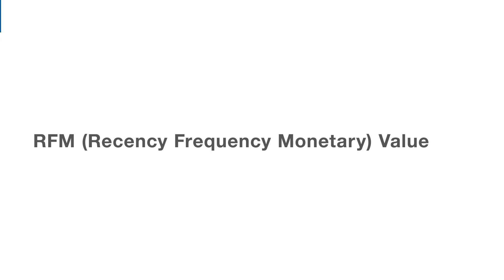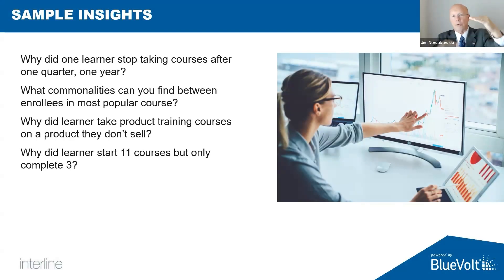Recency means the most recent purchase when you take a data set and sort it by most recent. Frequency means the one who buys often — who takes a lot of courses, perhaps. And then Monetary Value is the one who's worth more to you than the other people. It's the same data set, but you're sorting it three different ways. And it's very rarely the same person.